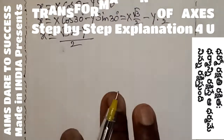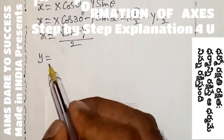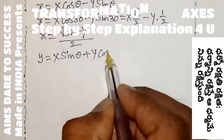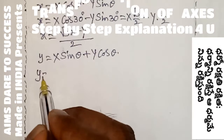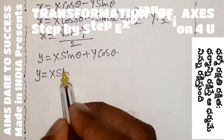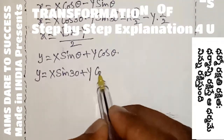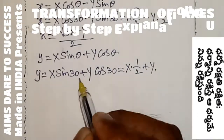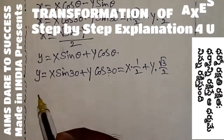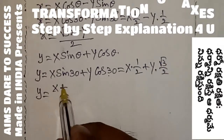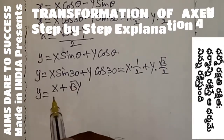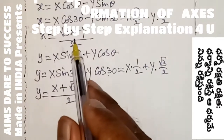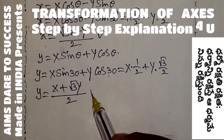Now I write small y. According to the box: small y = capital X·sin θ + capital Y·cos θ, with θ = 30°. So small y = X·sin 30° + Y·cos 30° = X·(1/2) + Y·(√3/2) = (X + √3·Y) / 2. So small x = (√3·X − Y)/2 and small y = (X + √3·Y)/2 — substitute these two values into the given equation.